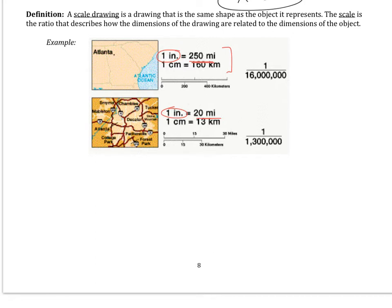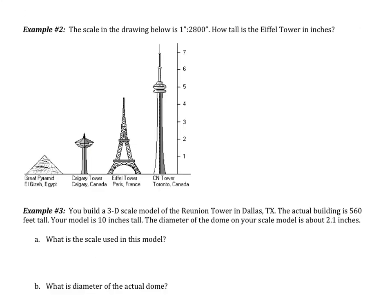So these are scale drawings. You're going to be using this to set up proportions. This right here is going to be one of your ratios. Let's look at an example on the next page. It says the scale in the drawing below is 1 inch to 2,800 inches. How tall is the Eiffel Tower in inches?